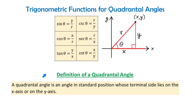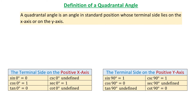Let's talk about quadrantal angles. A quadrantal angle is an angle in standard position whose terminal side lies on the x-axis or on the y-axis. So while a typical angle may have its terminal side in quadrant 1, with quadrantal angles the terminal side will be either on the x-axis or on the y-axis.